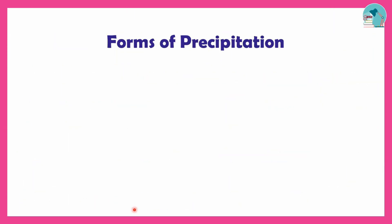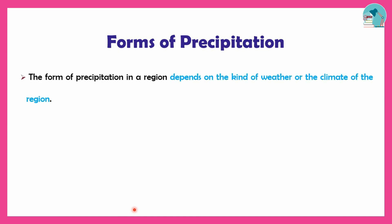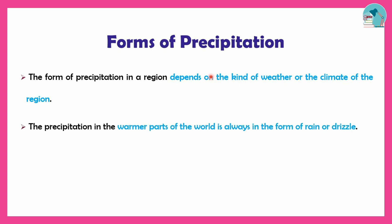Precipitation occurs in various large forms. Whether it depends on the weather and climate — in warmer regions, there is rain or drizzle, and in colder regions, there is snow or ice.